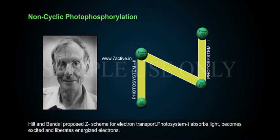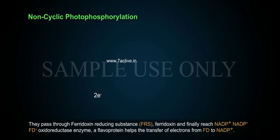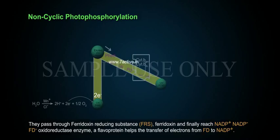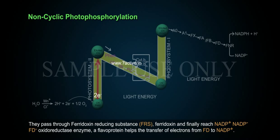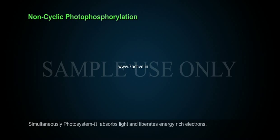Photosystem 1 absorbs light, becomes excited, and liberates energized electrons. They pass through ferredoxin-reducing substances (FRS), ferredoxin, and finally reach NADP+ via NADP-FD-oxidoreductase enzyme. A flavoprotein helps the transfer of electrons from FD to NADP+.